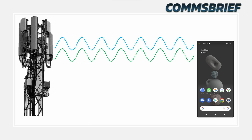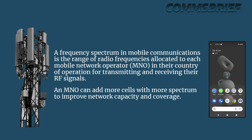With that in mind, let's look at the definition of a frequency spectrum. A frequency spectrum in mobile communications is the range of radio frequencies allocated to each mobile network operator in their country of operation for transmitting and receiving their RF signals or radio signals. An MNO, or mobile network operator, can add more cells with more spectrum to improve network capacity and coverage.